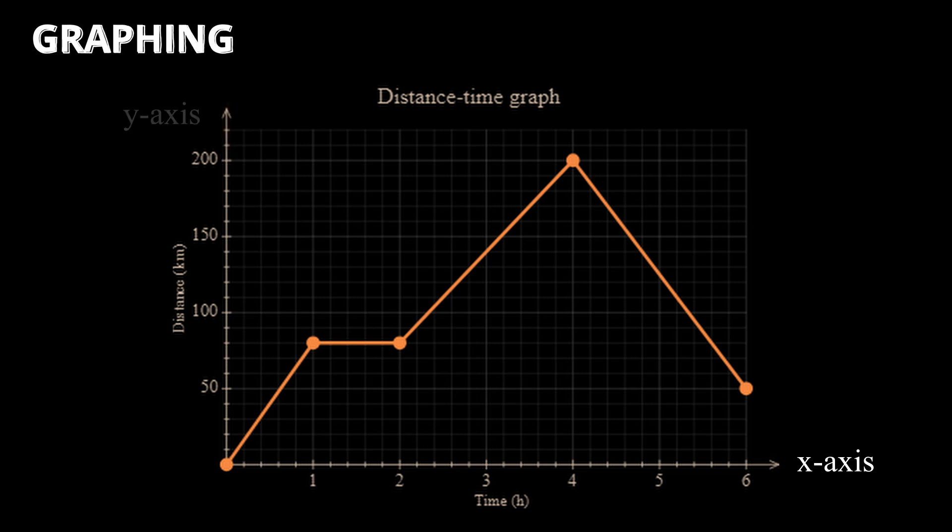Every point on this grid has an address, called coordinates. Our coordinates are labeled x comma y. For example, this point is at 4 comma 200.